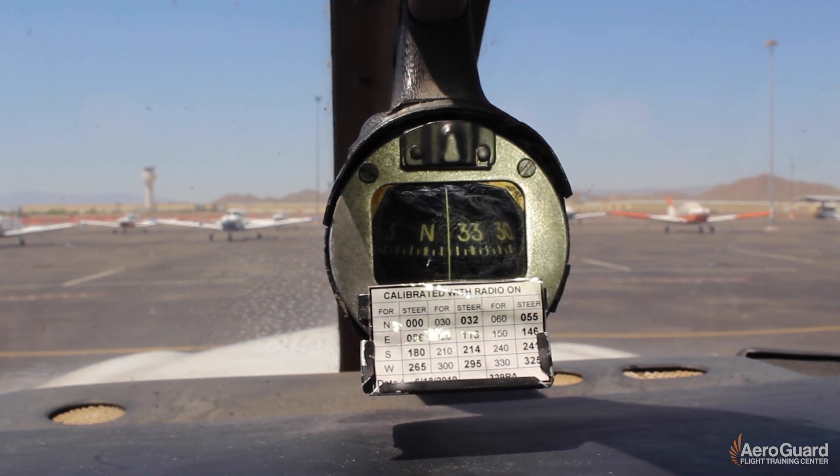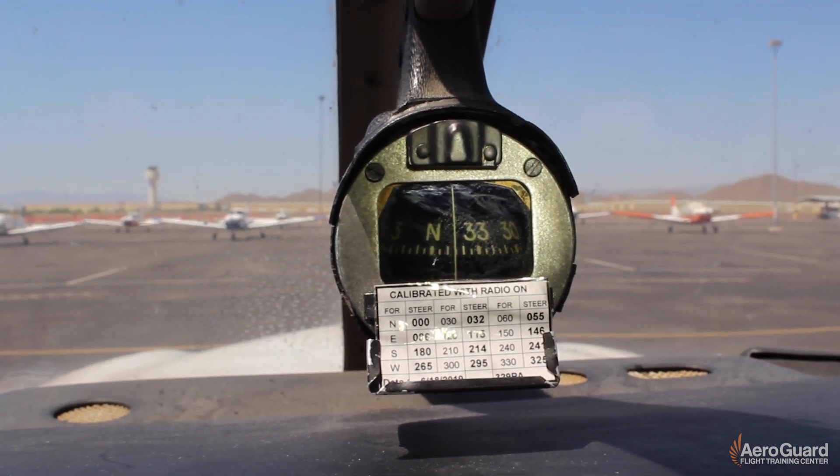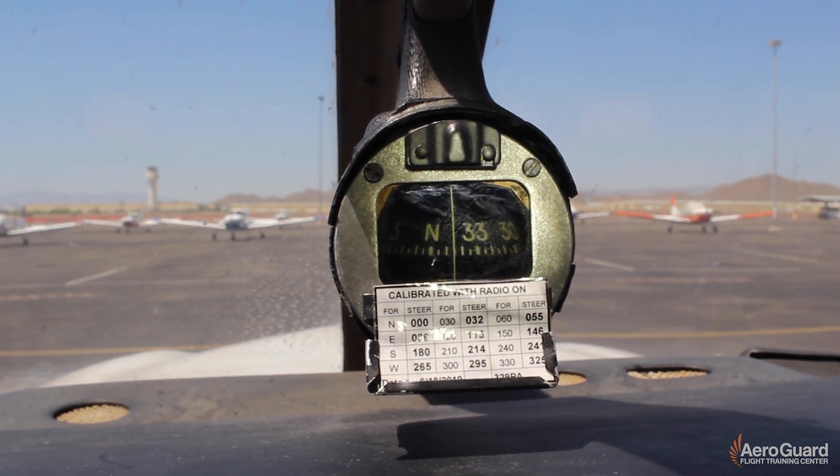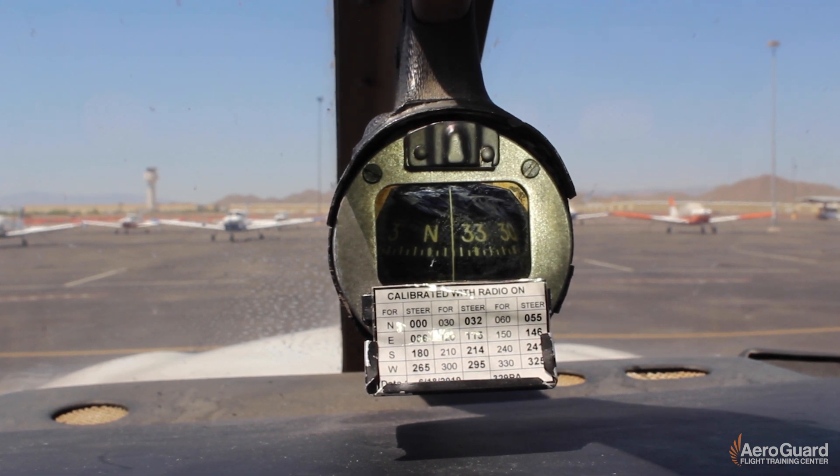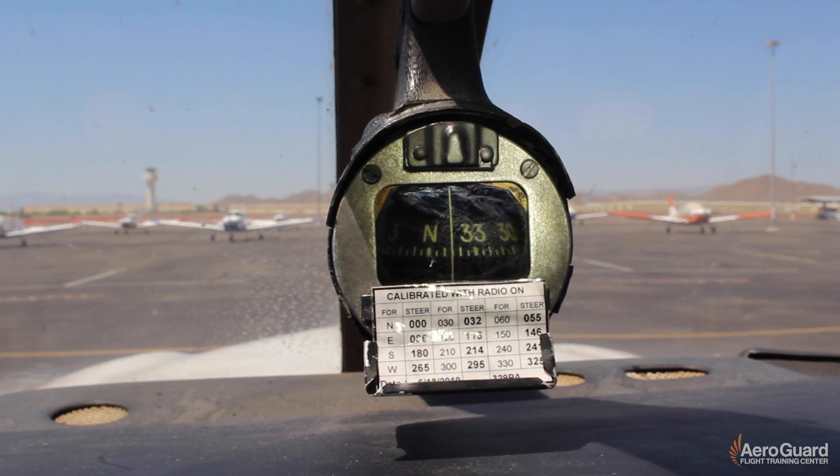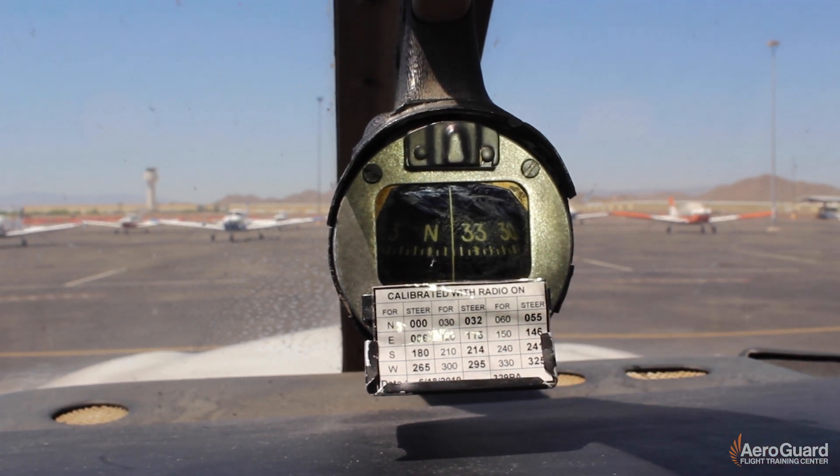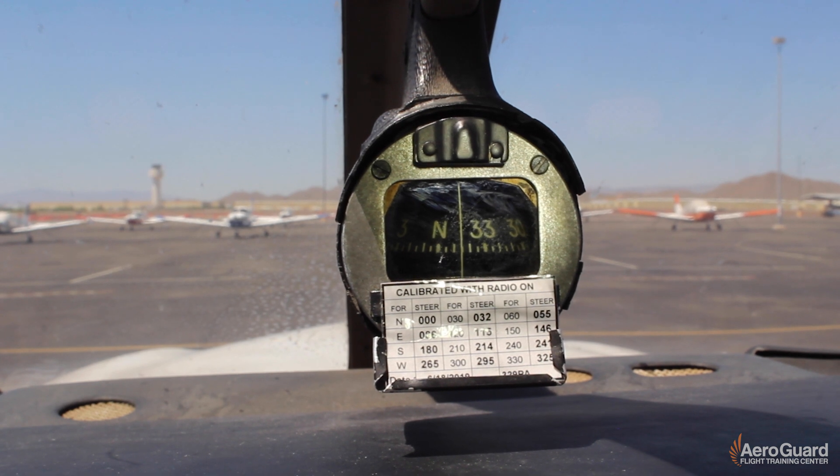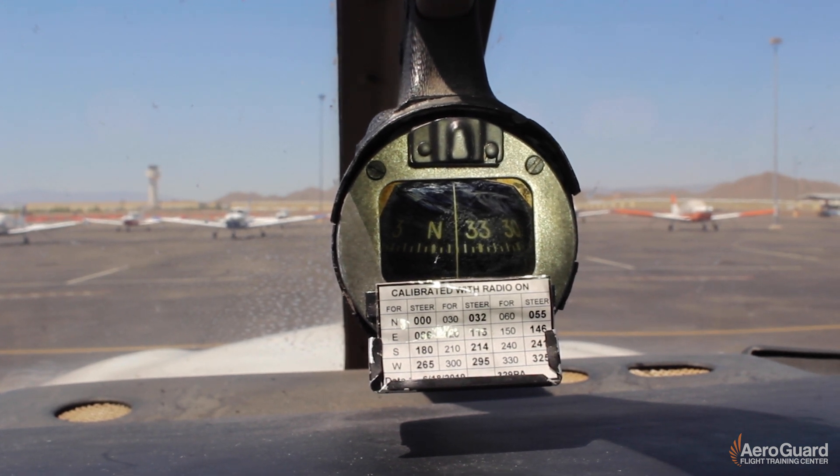So this is kind of this whole concept of deviation and how it applies to our compass. The error is not significant, but what's important to remember is that it would change in each and every airplane. So in this Archer that we're in, we see that there's four degrees of deviation to the east. But if we go jump in another Archer, that deviation might be different for that particular airplane.